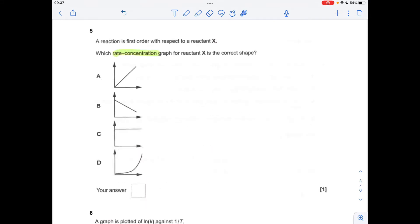Okay, so very similar to the first question. Notice now we've got rate concentration graphs. And we've got to find the right one for first order. So first order is where the rate is directly proportional to the concentration. So it's A.